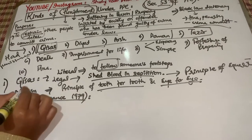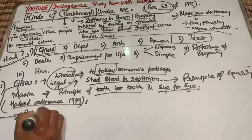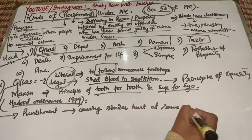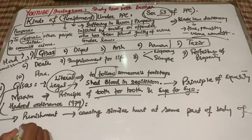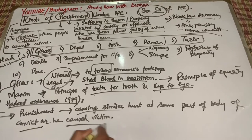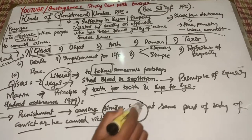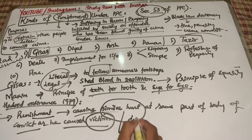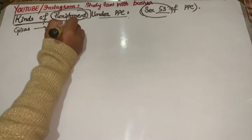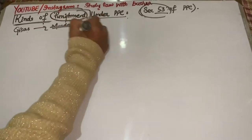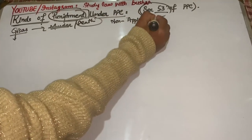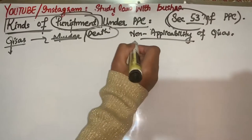Hadood Law Ordinance 1979 ke under yeh humein batai gayi thi. Kisas ka matlab hai punishment by causing similar hurt at the same part of body of convict as he has caused to victim, or by causing his death. Usi tarha ka hurt us convict ko cause karna jis tarha se usne victim ko cause kiya tha, ya phir uski death cause karna. Kisas is always given in cases of death.